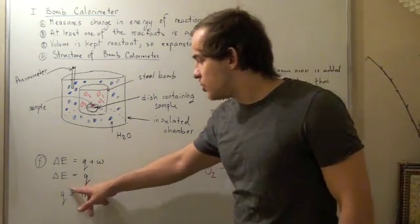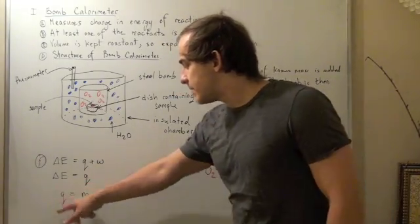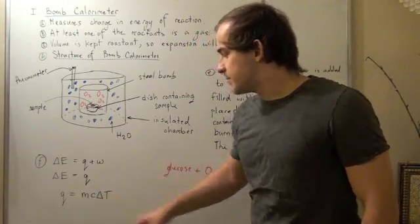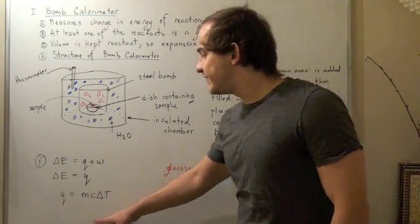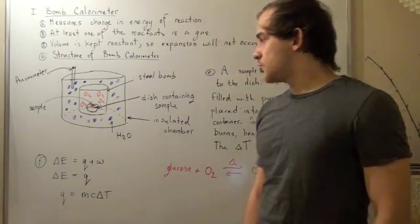So what we simply do is we use this formula by using the total mass plus the specific heat capacity plus change in temperature, and we can find our change in energy.